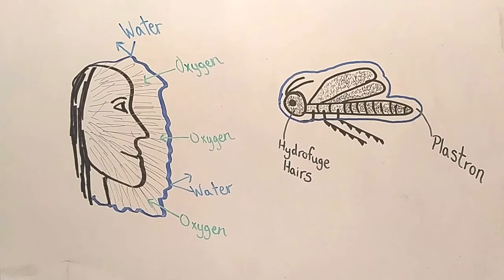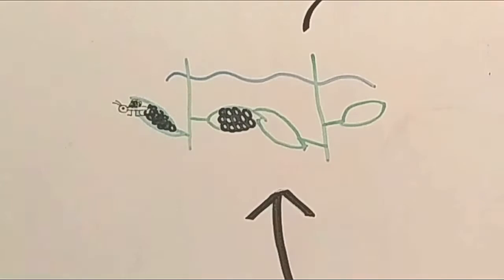The moth can actually crawl back to the surface of the water and fly away, because she was completely surrounded by air the whole time that she was underwater. Although, most females will stay underwater, lay all of their eggs, and then become fish food.